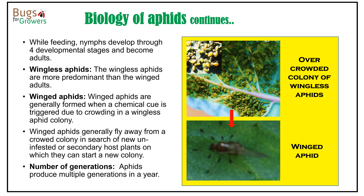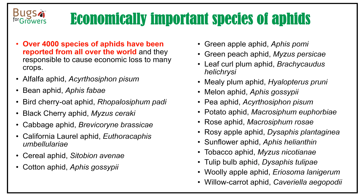Aphids generally produce multiple generations in a year. There are over 4,000 species of aphids that have been reported from all over the world. These species are responsible for causing economic losses to many plant species. Here I have listed a few economically important species that cause damage to respective crops for your information.